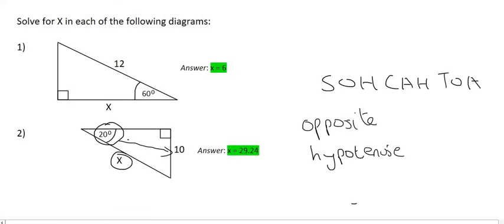So what we have is the opposite and the hypotenuse, and so that's going to be sin. And so what we do is we say that the sin of 20 is equal to the opposite, which is 10, over the hypotenuse, which is x.